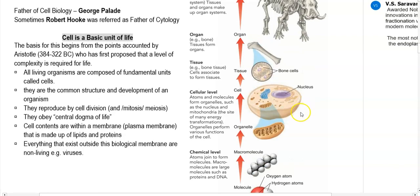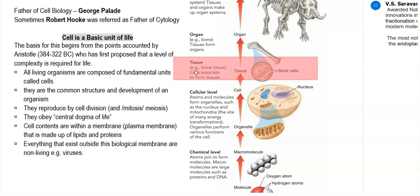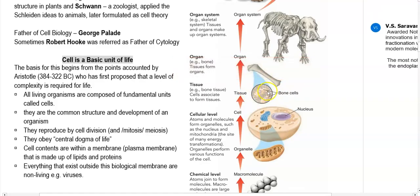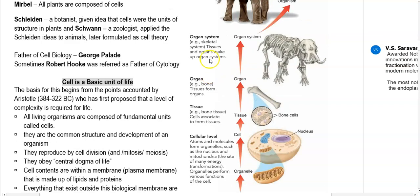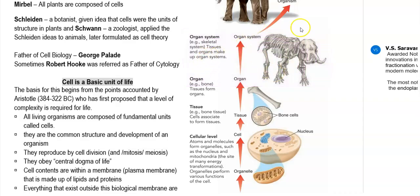Biomacromolecules can be further organized into higher structures such as tissues — cell-to-cell interaction results in the formation of a tissue. For example, bone cells associate to form bone tissue, which forms into an organ. The organ referred to here is a bone of a living system, which can be explained in the next diagram. The bones together form the skeletal system of a living organism.